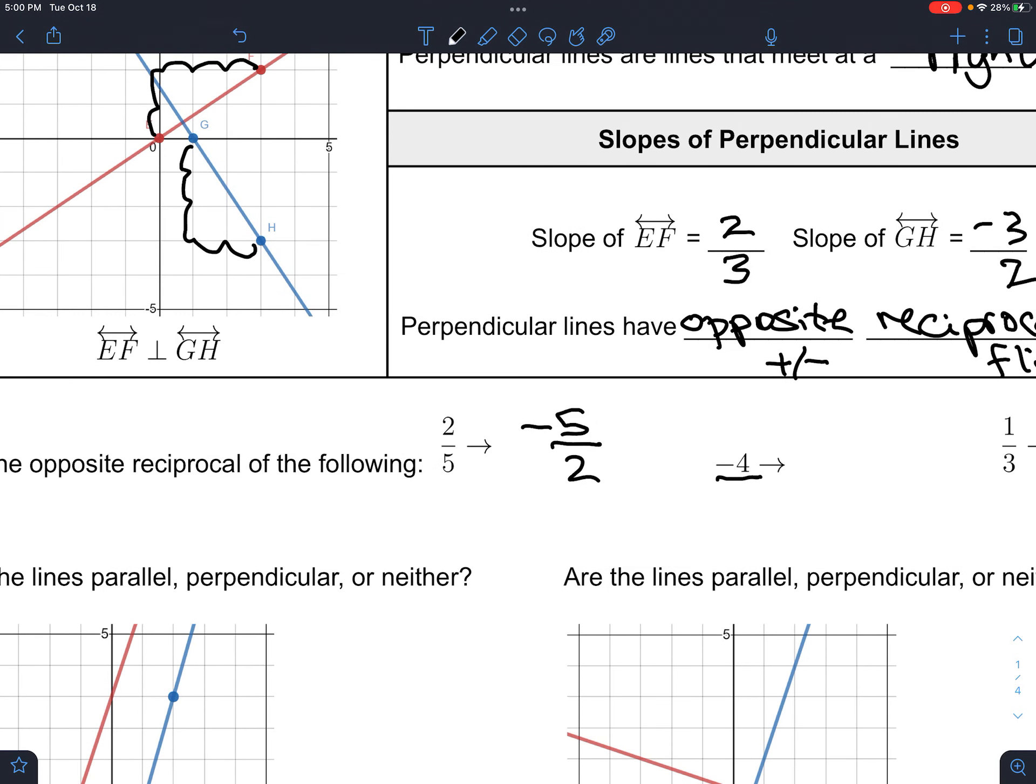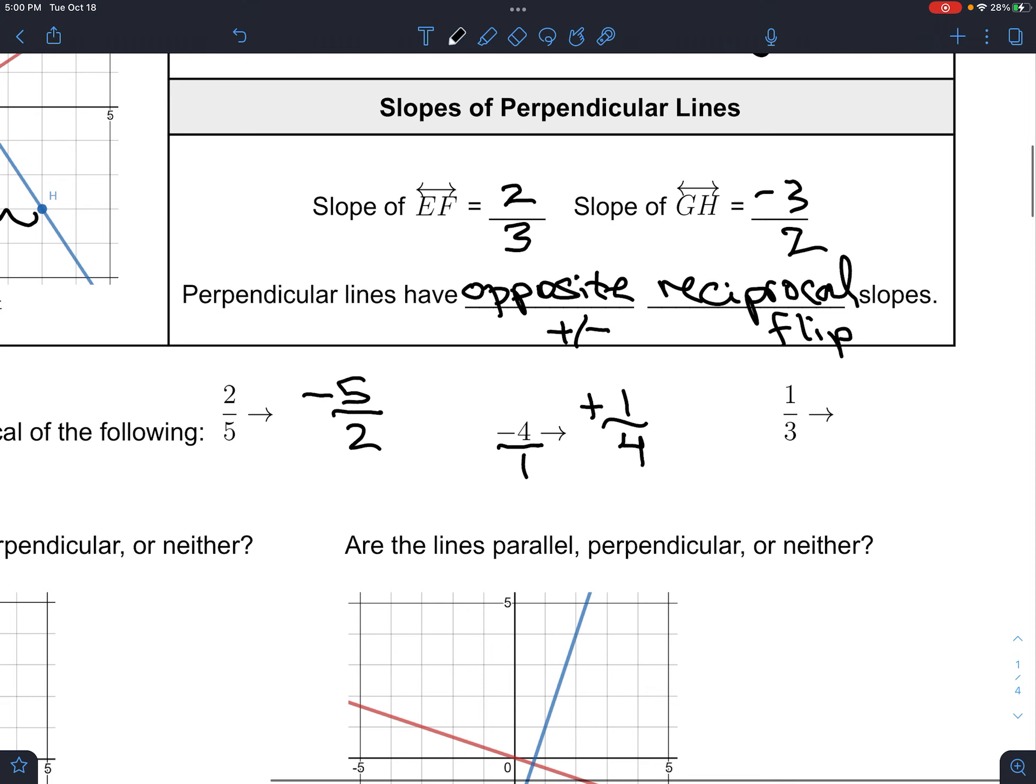So, if it's ever a whole number, or, I'm sorry, an integer, which means that it's, you know, negative three, negative two, negative one, zero, one, two, three, and everything that goes after that. But, put a one down there, so it's a fraction, and then flip it. And Opposite Reciprocal means that the negative is going to flip to a positive. So, this is positive.